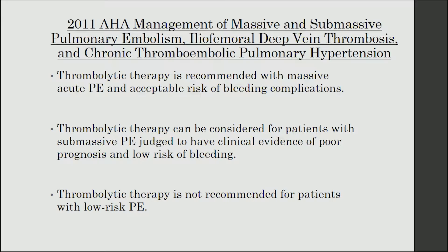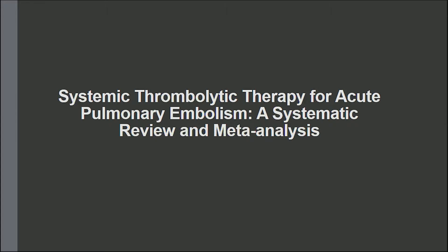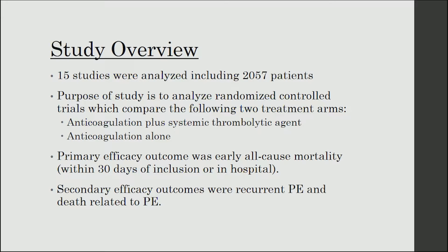Now, to examine some of the primary literature behind thrombolytic therapy, we're going to look at a study titled 'Systemic Thrombolytic Therapy for Acute Pulmonary Embolism: A Systematic Review and Meta-Analysis.' This study looked at 15 randomized clinical trials which included a total of 2,057 patients. Each of these studies compared two treatment arms: anticoagulation plus systemic thrombolytic agent, and anticoagulation alone. The primary efficacy outcome was early all-cause mortality, defined as death within the first 30 days of inclusion in the study or death during the hospital stay. The secondary efficacy outcomes were recurrent PE and PE-related death.